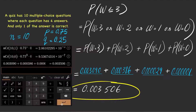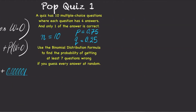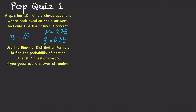In other words, the probability of getting at most 3 questions wrong is 0.35%. Use the binomial distribution formula to find the probability of getting at least 7 questions wrong if you guess every answer at random.